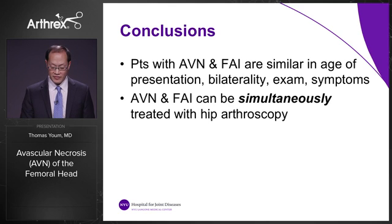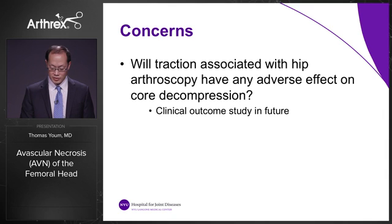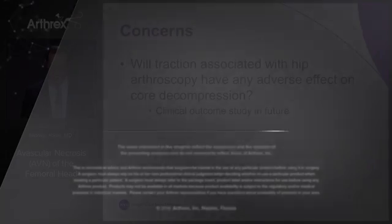Patients with AVN and FAI are similar in age and presentation. Bilaterality of symptoms should always be examined. AVN and FAI or labral tears can be simultaneously treated with hip arthroscopy. A concern for the future is whether traction associated with hip arthroscopy will have any adverse effect on the core decompression, and this will be further elucidated by clinical outcome studies.